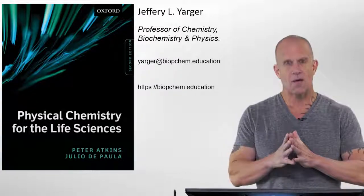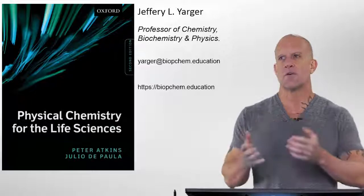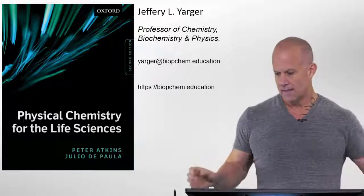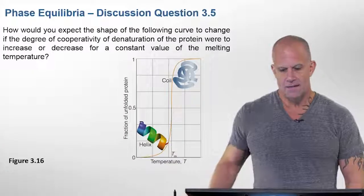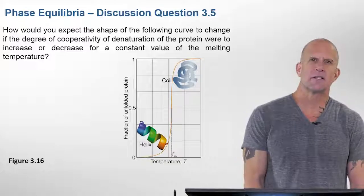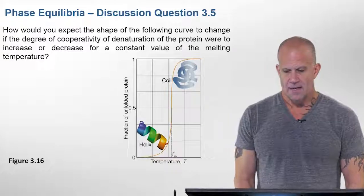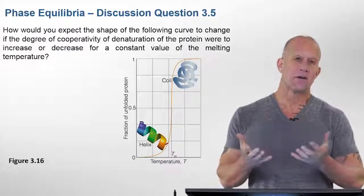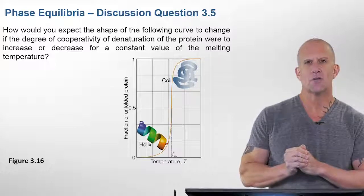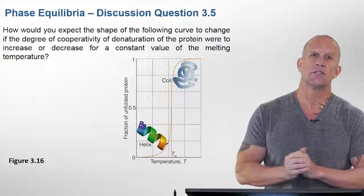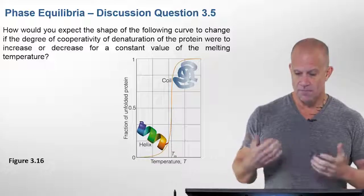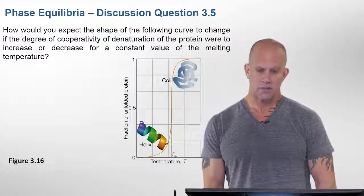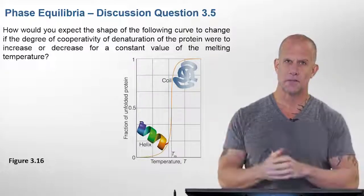Specifically, we'll have further information on biopchem.education, or of course you can look up stuff in the textbook directly. This discussion question, which is in the chapter on phase equilibria, is asking about a specific figure that you can find in the textbook which shows the denaturization of a protein going from a folded state, specifically a helical structure, to a random coil or an unfolded state.